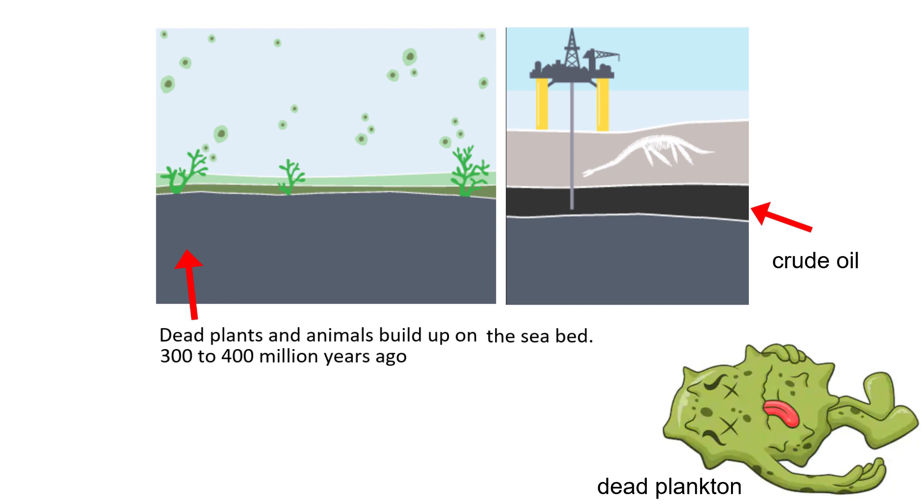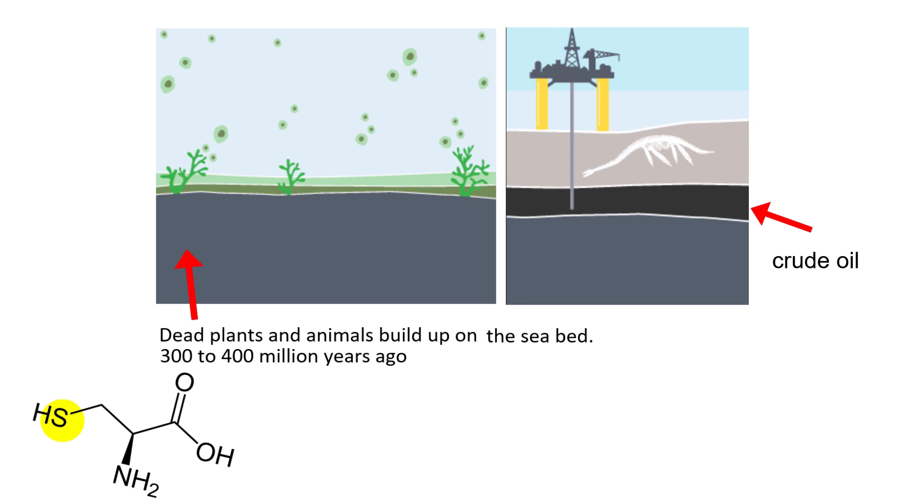Because oil comes from processed dead organisms, it has some nasty consequences. Remember amino acid cysteine? It has sulfur in it. It should not surprise you then that in the crude oil there are also elements like sulfur and other stuff like nitrogen, phosphorus and so on.